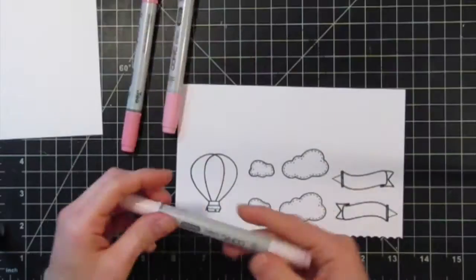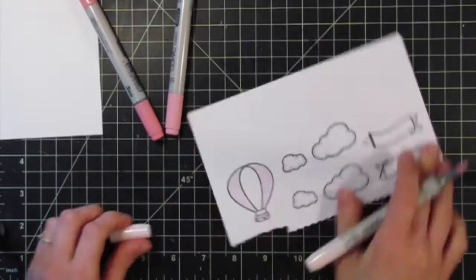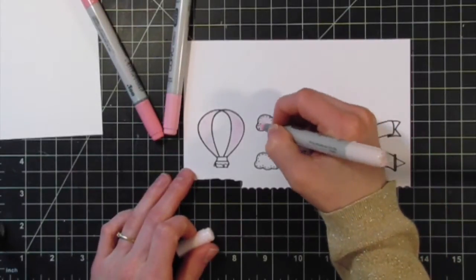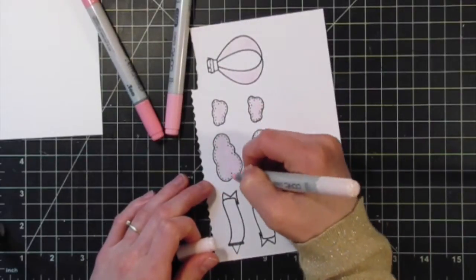You can see I'm stamping two of the banners - we're going to be using half of each one to create our sentiment later on. I'm starting off with RV00, just using that for a base coat on the clouds and also on two of the stripes.